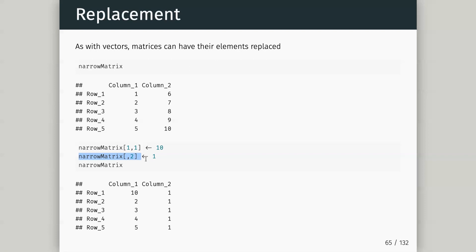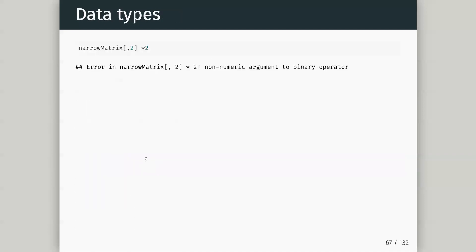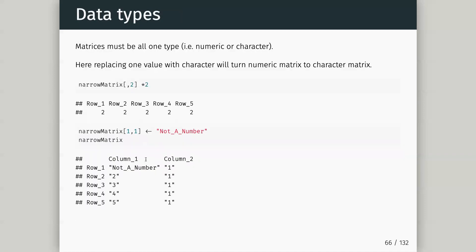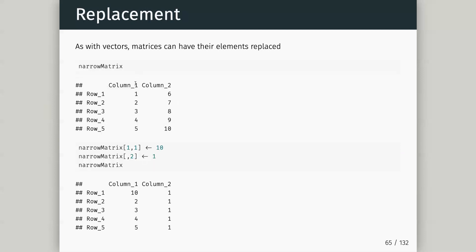So we can operate on matrices: arithmetic operations, replacement, subsetting using logical vectors, just as we've done for standard vectors. One frustrating thing about matrices is that they must be all one data type so that operations can be applied to the whole table. This is a problem because if we accidentally add a character or string anywhere within our matrix, the whole matrix becomes character.